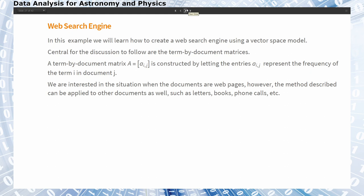Central for this discussion are the term-by-document matrices. A term-by-document matrix A is constructed by letting the entries A_ij represent the frequency of a certain word i in document j. We are interested in the situation when documents are, for example, web pages. But this can be applied to other documents as well.